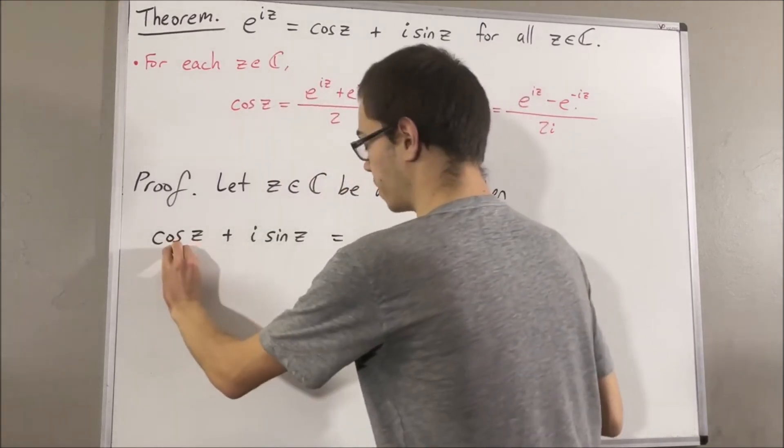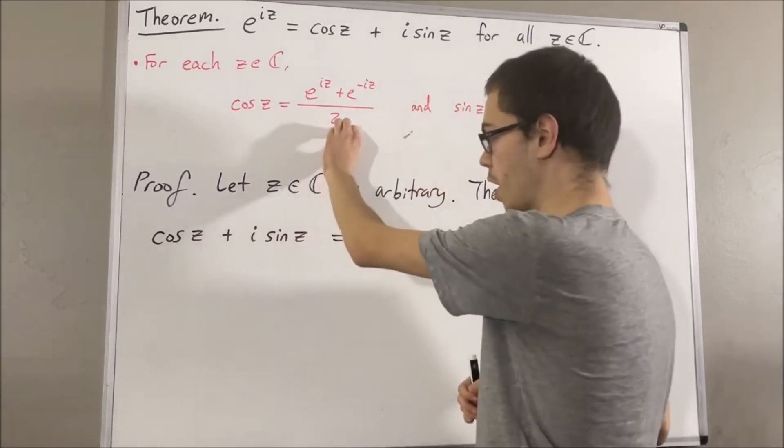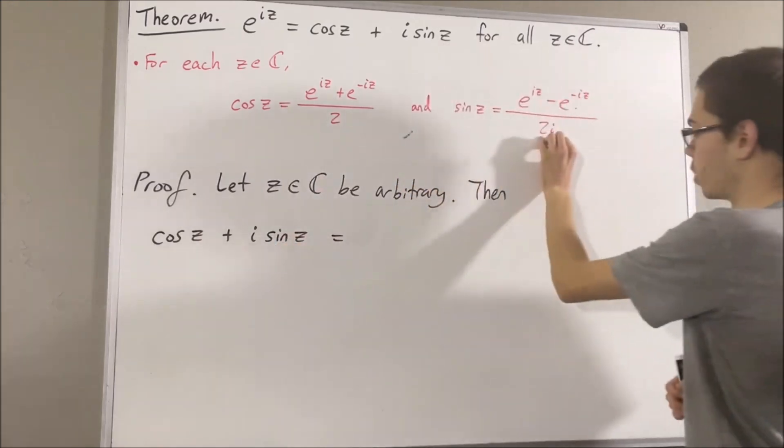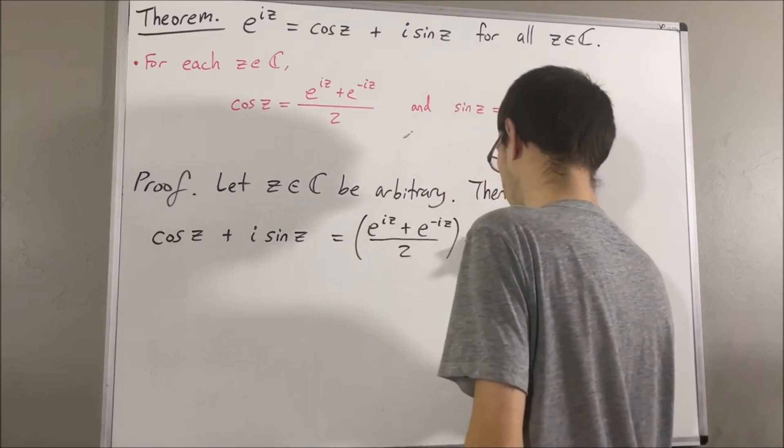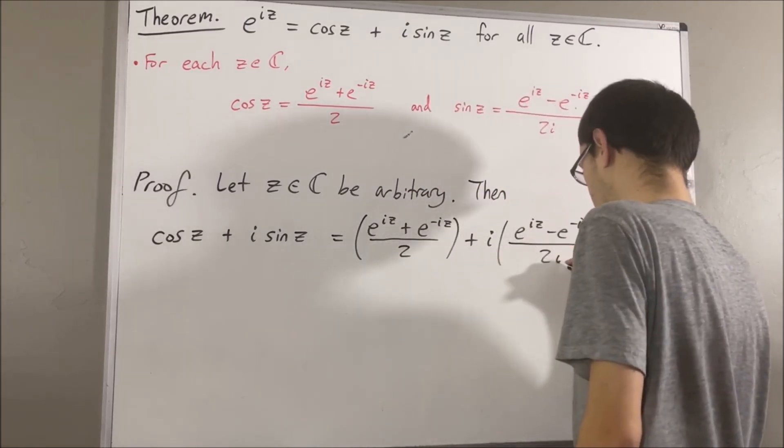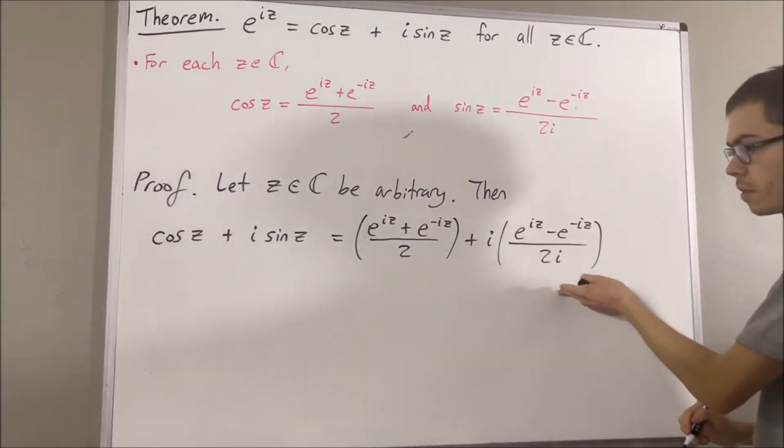Now, we're going to substitute cosine of z for what it is by definition, and we're going to substitute sine of z for what it is by definition. So we get this. Now notice,